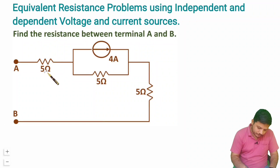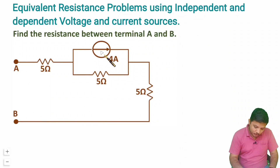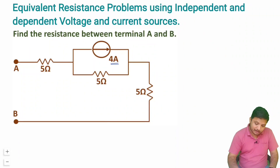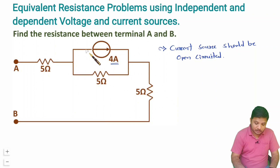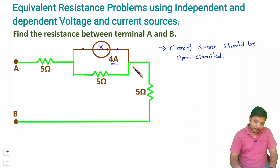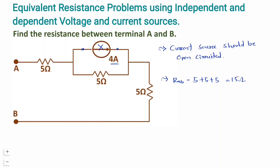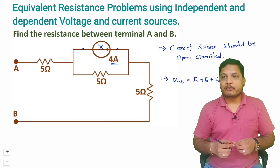In this first circuit, we are asked to find equivalent resistance and there is a current source of 4 amperes, which is an independent current source. As stated, the current source should be open circuited. Once it is open circuited, the three 5Ω resistors are in series, so RAB = 5 + 5 + 5 = 15 ohms. This is how we simply find the equivalent resistance.